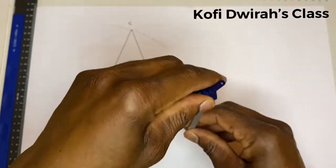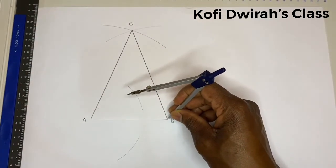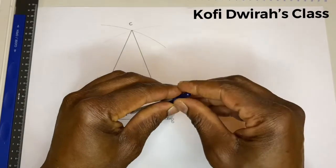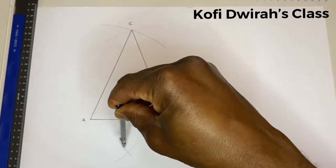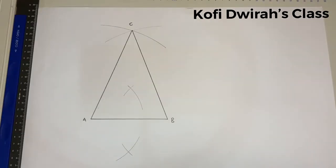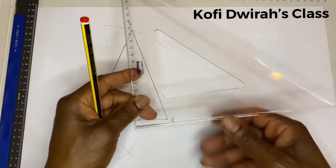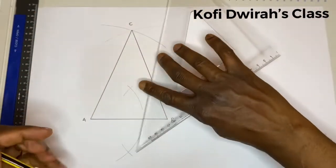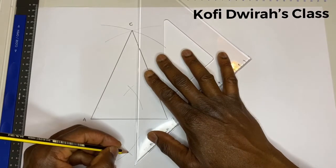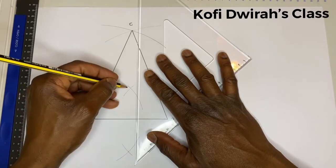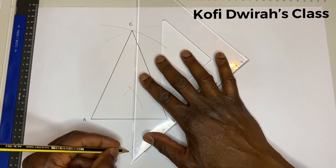So at point A you draw your arc, then at point B you draw your arc, and you draw your line from here to here. So it goes like this.